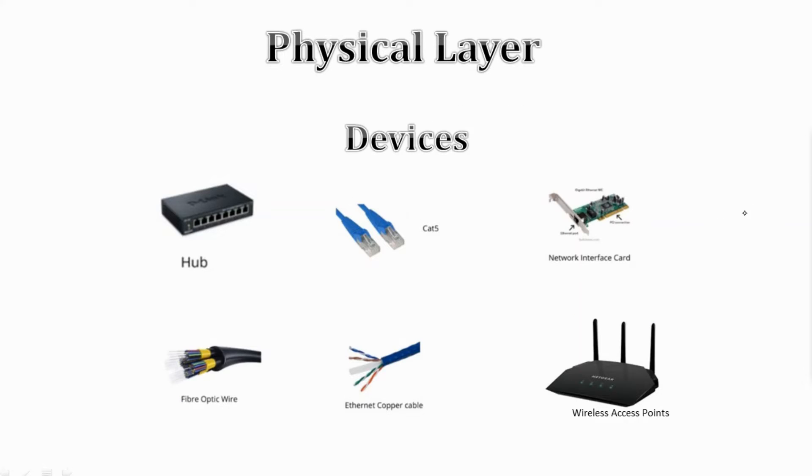Let's look into the devices that work on the physical layer, which include hub, Cat5 cable, NIC network interface card, Ethernet copper cable, wireless access point, and fiber optic cable.